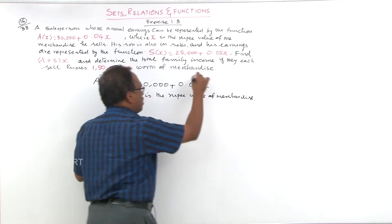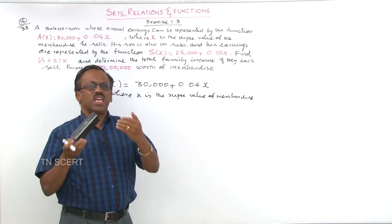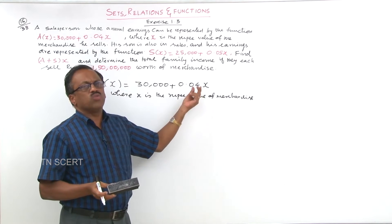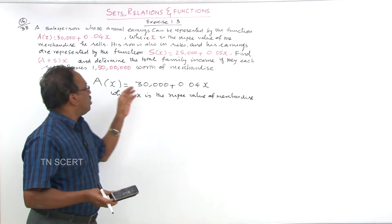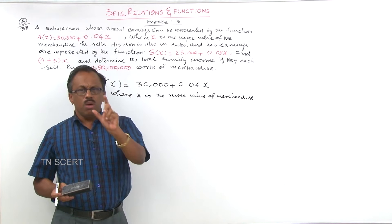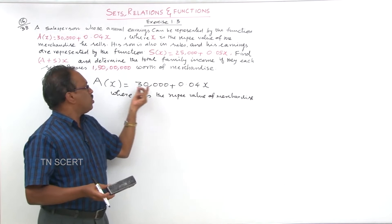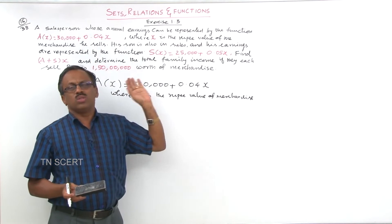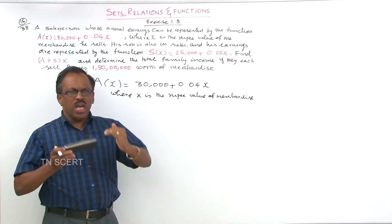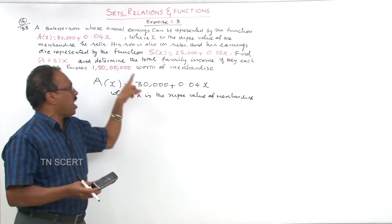For example, suppose if he sells for 100 rupees, then 100 into 4 percent gives 4 rupees he will be getting. So if he sells a product for 500 rupees, he gets 4 percent of 500, so his earnings are 30,000 plus that amount. Depending on his sales, this variable amount keeps moving. That is the main aspect of the problem.